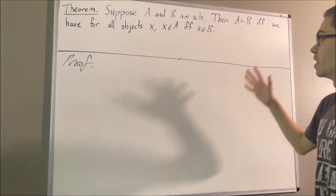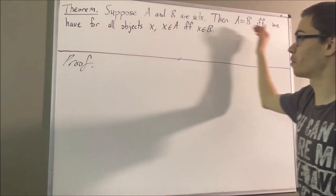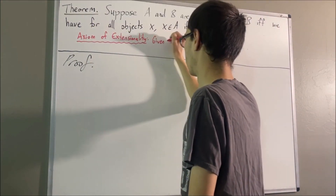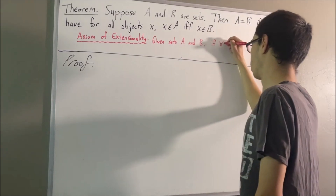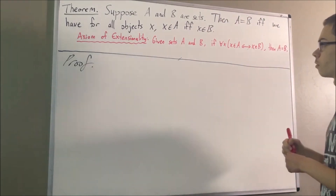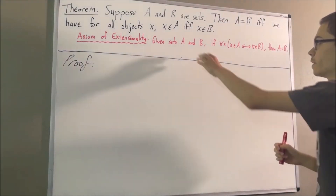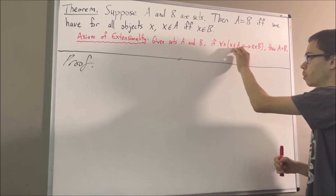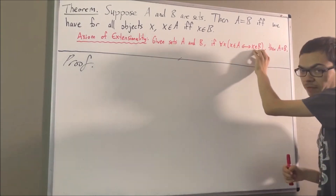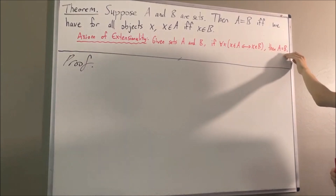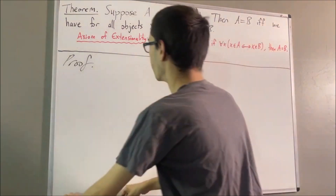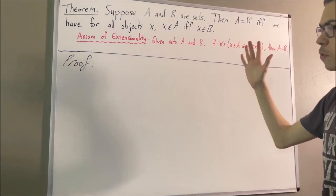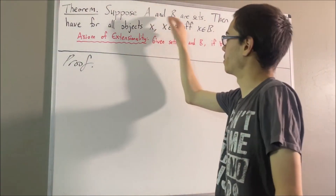And what the axiom of extensionality tells us is that the converse of this statement is true. That is, given sets A and B, if for all X, X is an element of A if and only if X is an element of B, then A is equal to B. So, let's prove this theorem.